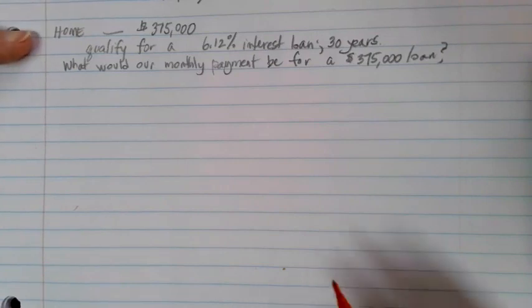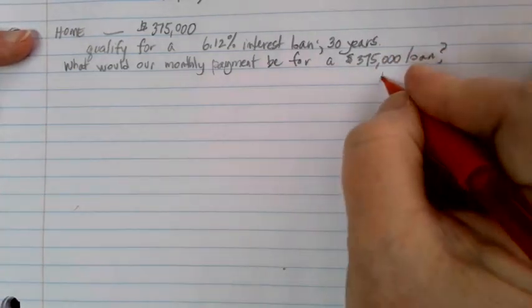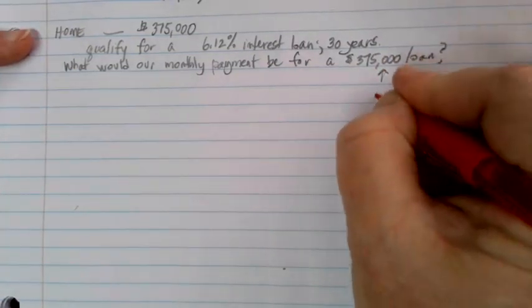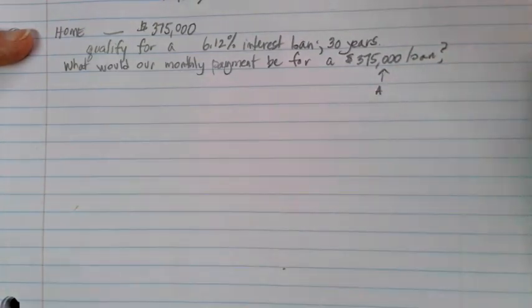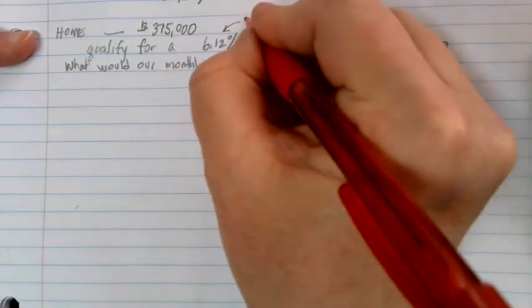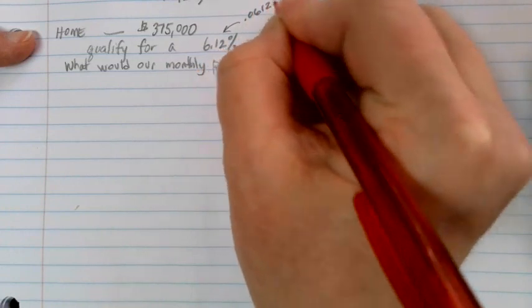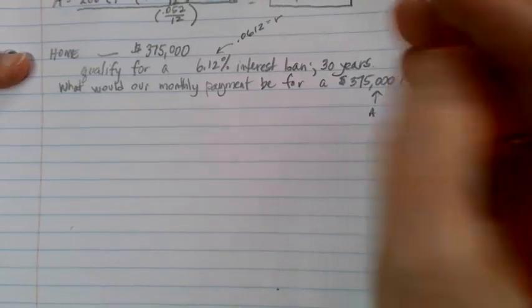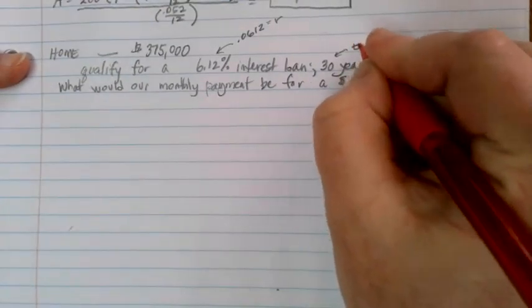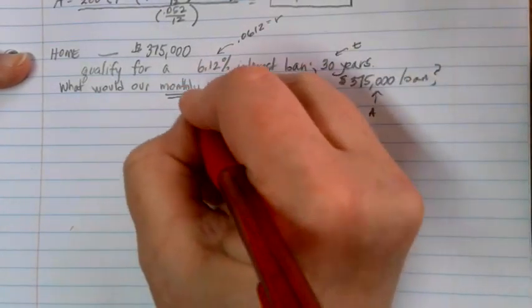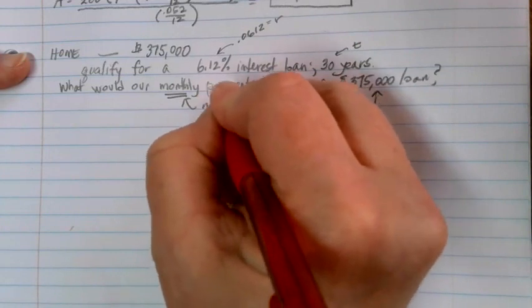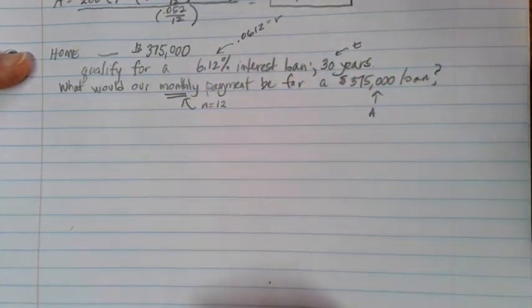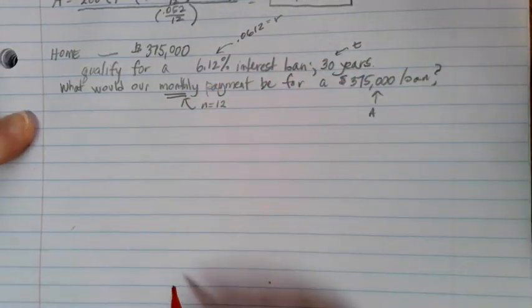We have all of the information that we need. This value here is the amount of the loan, so $375,000 is going to be my A. My 6.12% becomes 0.0612 for my R value. 30 years is my time, and we're looking for a monthly payment, so we're interested in using N equals 12. We want to find what that monthly payment would be, so we're looking for D in our formula.